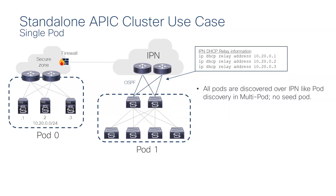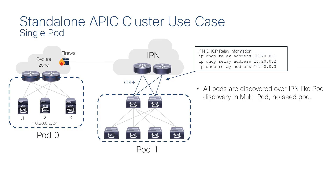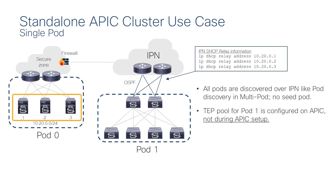Now let's look at the Standalone APIC cluster use case for a single pod fabric. Here we show three APICs connected to a layer 3 network remote from the physical pod — the APICs are not directly connected to the leaf switches. The APIC infra IP addresses are configured during the APIC setup. Each APIC can have an IP address in the same subnet, or each APIC can have an infra IP address in a different subnet. There is no seed pod in the Standalone APIC cluster use case.